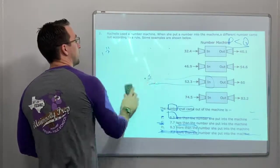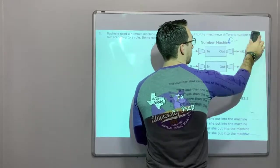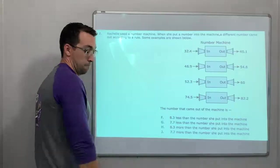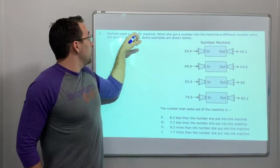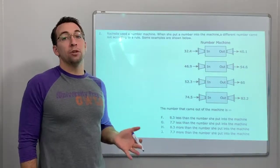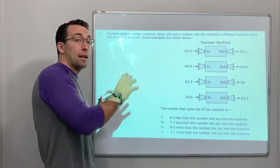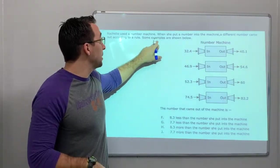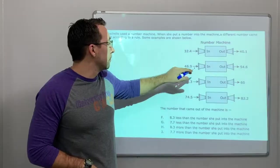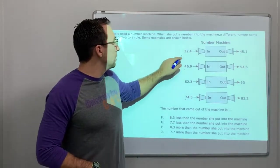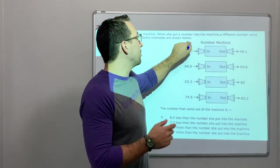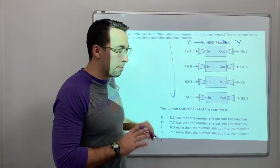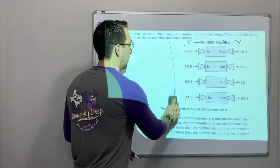All right. Last question on this video. Rochelle used a number machine. When she put a number into the machine, a different number came out according to a rule. So what's the rule? We have to figure that out. Some examples are shown below. Hmm. Looking at this, do we think, remember, the pattern is x to y. We're not trying to find patterns up and down. We're trying to find a pattern from x to y.